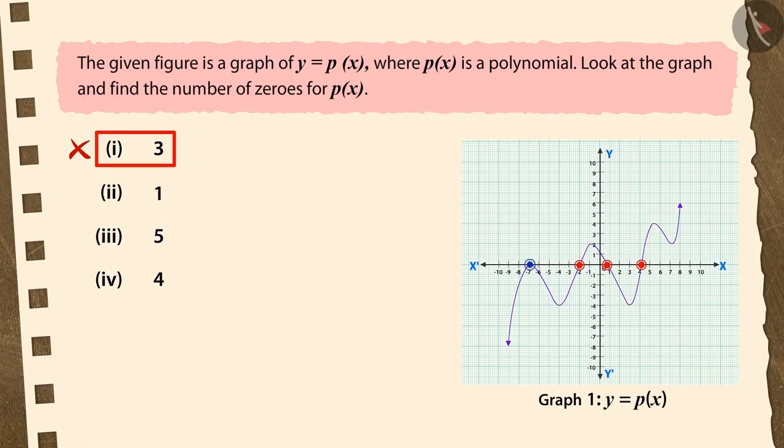Recall that we have studied three cases of the zeros of a quadratic polynomial. In one of the cases, the graph intersects the x-axis at only one point, that is, at a coincident point.